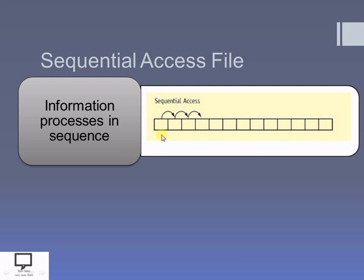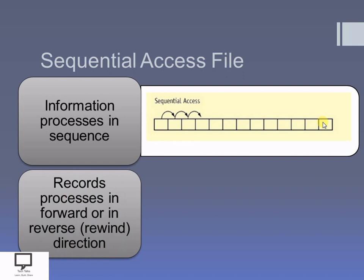You can consider this as a file. These N number of records are already available in your file, and sequentially one by one we access each record. After accessing one record, we move forward to the next record, and so on. You perform the same task to access all the records one by one in sequence. The records in a sequential file can be processed either in the forward direction or in the reverse direction, which is also called as rewind, but always in sequence.